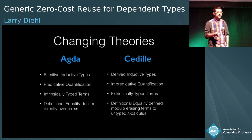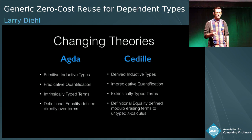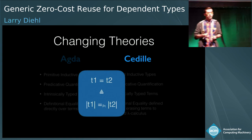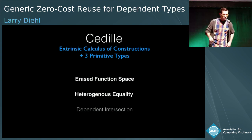Let me briefly compare Agda and Cedille. Agda has primitive inductive types, predicative quantification, intrinsically typed terms, and definitional equality defined directly over terms. Whereas Cedille has derived inductive types, impredicative quantification, extrinsically typed terms—meaning you can assign a term multiple different types—and definitional equality defined modulo erasing the terms to the untyped lambda calculus. So in Cedille, a term T1 is definitionally equal to T2 if and only if erasing T1 to the untyped lambda calculus is beta-eta equal to erasing T2.